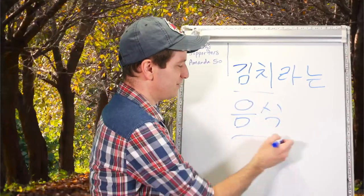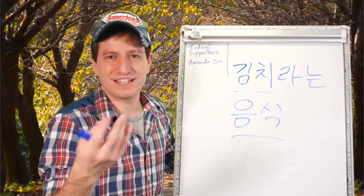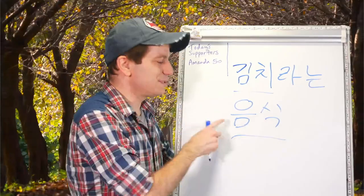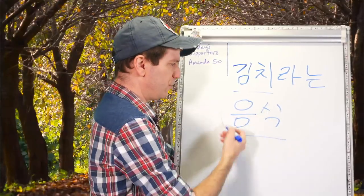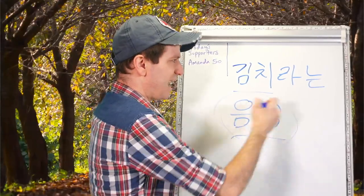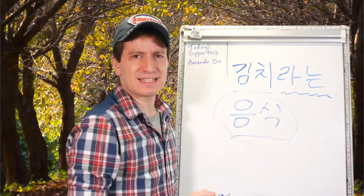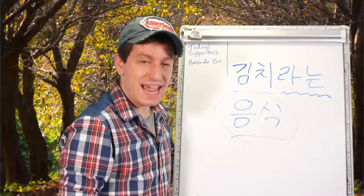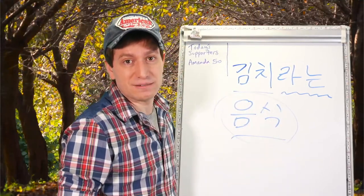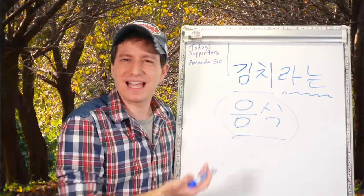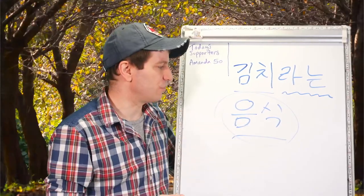김치 and 음식 — 음식 meaning food. So: food that is called, that is titled, that is named — 김치. Food called 김치. This isn't a sentence; it's just a fragment to show you the structure.